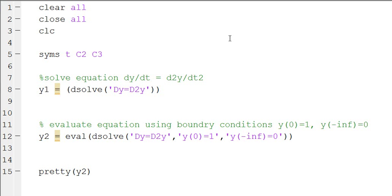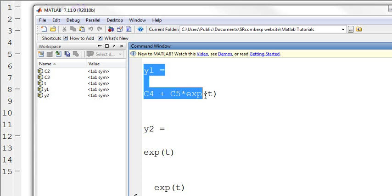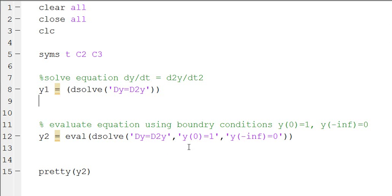So if we run this and look in our command window, y1 is equal to C4 plus C5 exponential of T. So this is a constant plus C5 times exponential of T. Now if we have boundary conditions, we can solve for what those constants are.